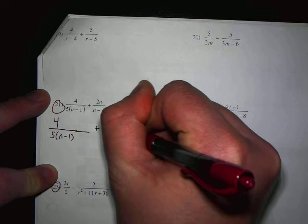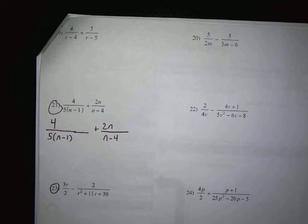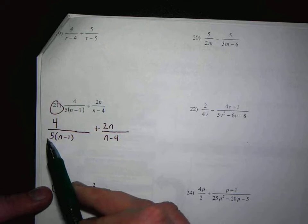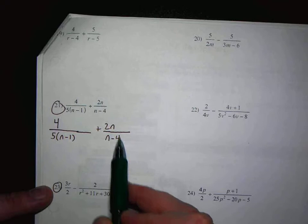Now, the denominators, do they have anything in common? No, we have a 5(n minus 1) and (n minus 4). They have nothing in common. So I'm going to need to give this one a 5(n minus 1) and give this one an (n minus 4).